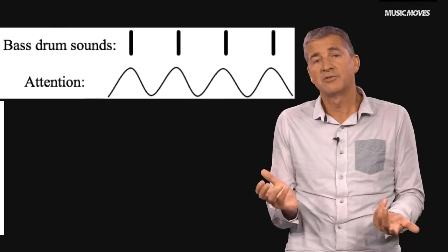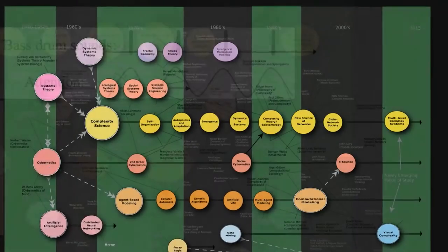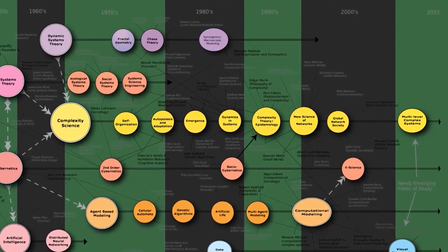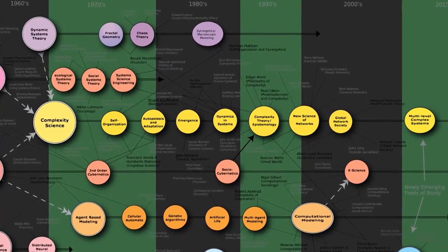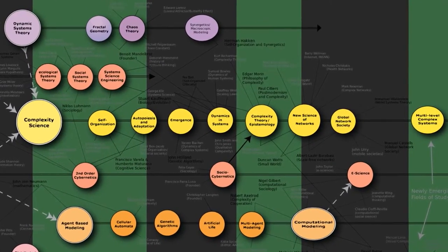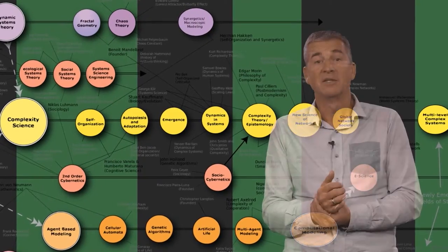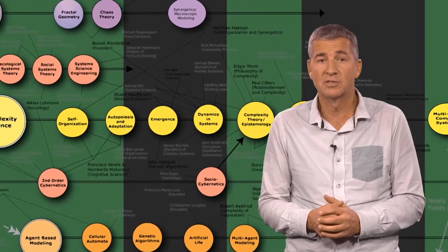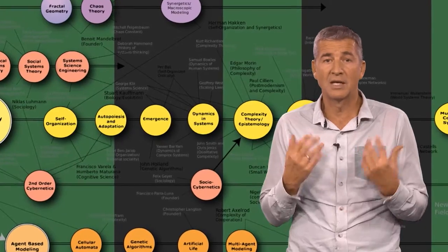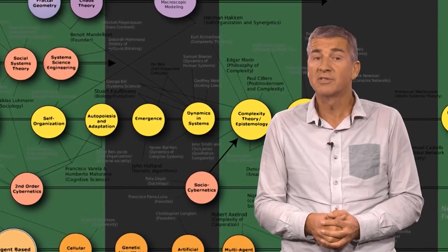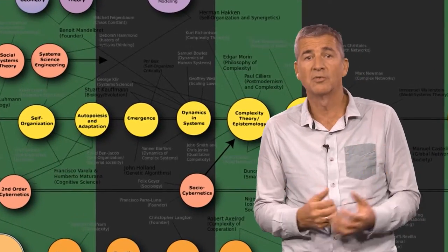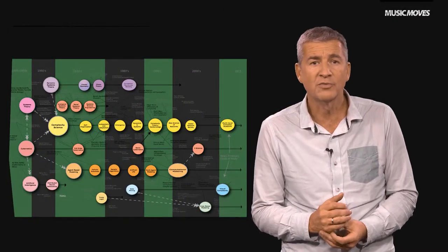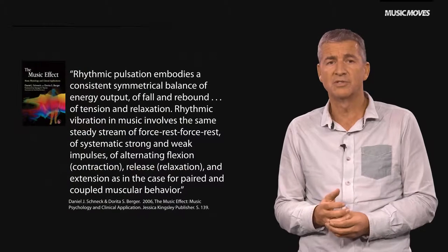This way of describing an entrainment process is in line with the view that sees our cognition as a dynamic system where many ongoing processes interact, with no start points, no end points, no inputs, no outputs. And this view questions a more traditional cognitive science approach, thinking about the brain as a computer. Rather, it sees the body as an integral part of our cognitive system. And the entrainment process seems even more convincing when bodily movement is introduced.